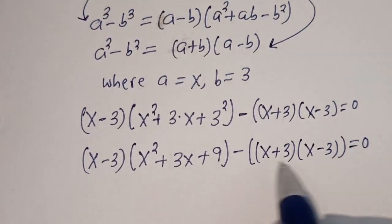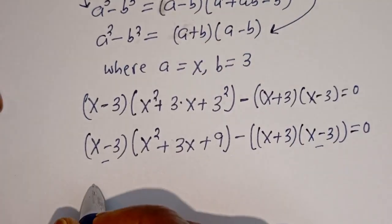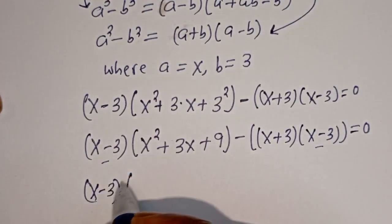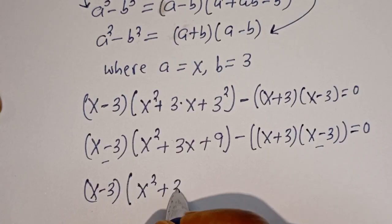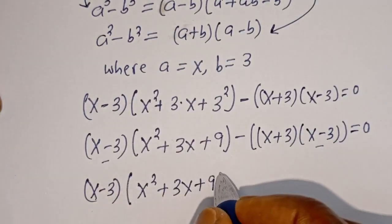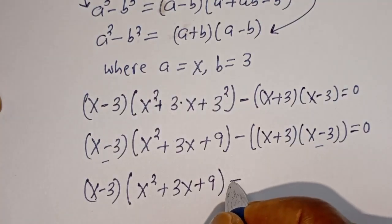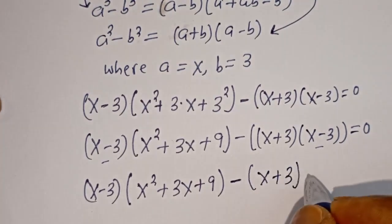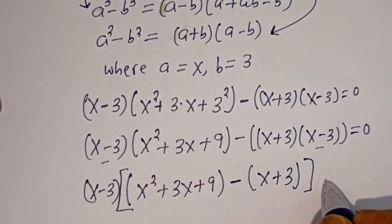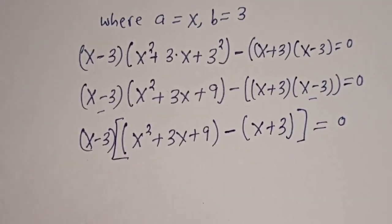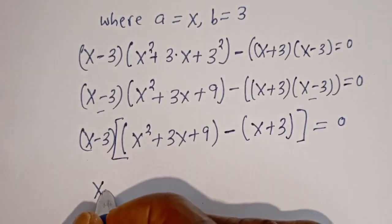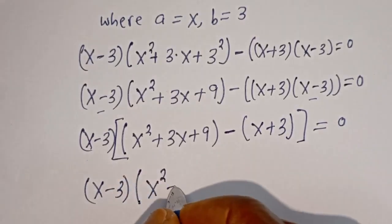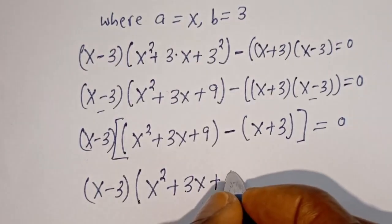If you look at this, S minus 3 is common here and here. Let's bring it out. We have S minus 3, bracket, S squared plus 3S plus 9, minus bracket S plus 3, equal to 0.